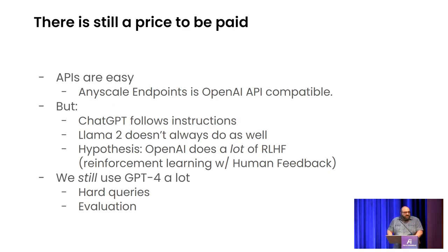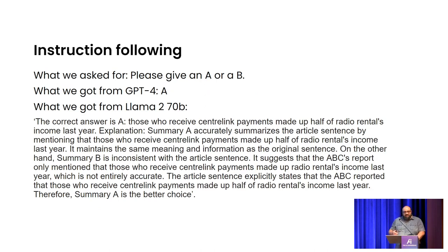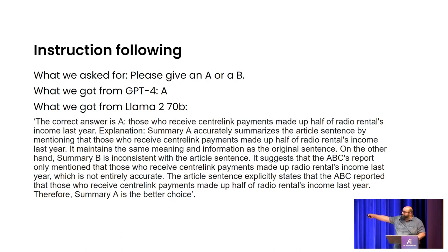My hypothesis is that OpenAI's secret sauce is actually the reinforcement through human feedback. They have thousands of labelers around the world that take the output and refine it, then use that through a process called RLHF to fine-tune and make it even better. So we still end up using GPT-4 a lot — for evaluations, because it's the best and most reliable grader, and sometimes for hard queries. When you ask Llama 2 70B to simply say 'A or B,' it gives you an essay instead, and remember you're paying per token — this is costing you real money.